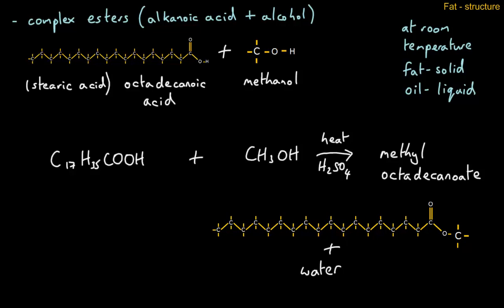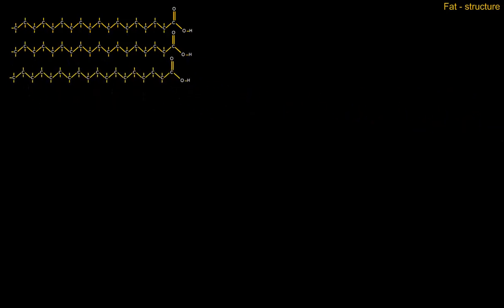Let's take a look at what happens if we substitute the methanol for a triol. So first of all we need our octodecanoic acids. In this case we're going to need three molecules, and we're going to add to this glycerol or glycerine, although the correct name is propane-1,2,3-triol.